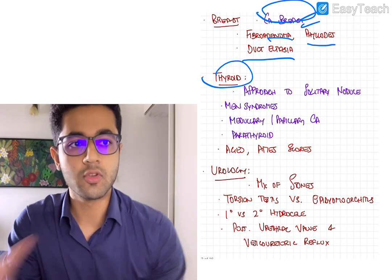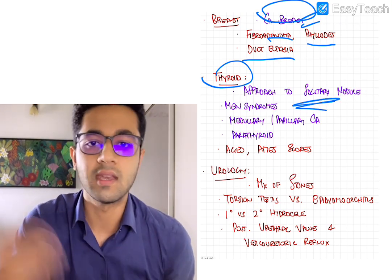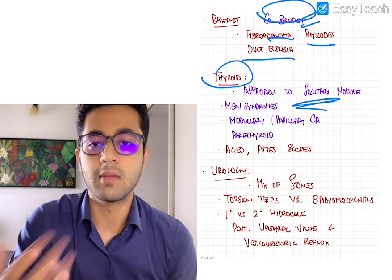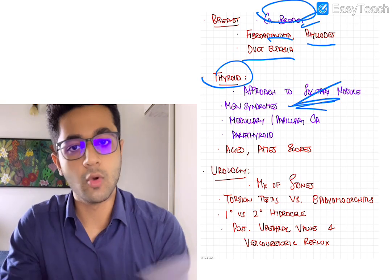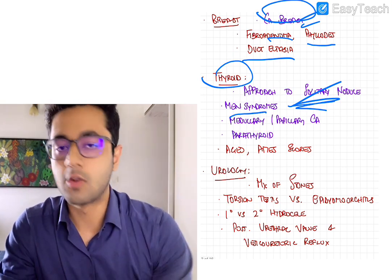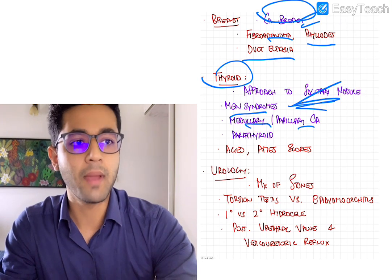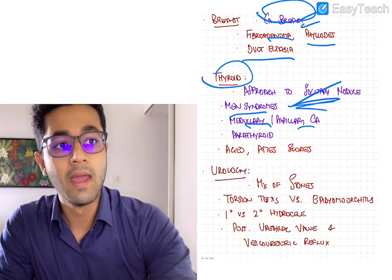CA breast is the most important and must-do topic in breast. When it comes to thyroid, the most important and must-do topic is the approach to a solitary nodule. So how do you treat and investigate a solitary nodule becomes very important. So solitary nodule, hyperthyroidism, hypothyroidism, I told you in the previous video too, it is the most important topic from thyroid. MEN syndromes, again important.